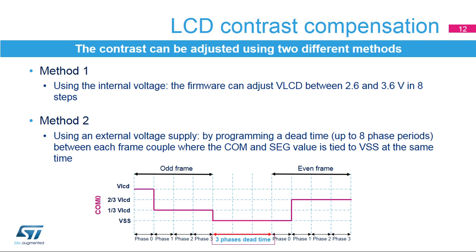The LCD controller offers high contrast control flexibility. The method used to adjust the contrast depends on the LCD supply source. When the step-up converter is selected as VLCD source, the VLCD value can be chosen among a wide set of values from 2.6 to 3.6 volts, which are selectable via the contrast control bits in the LCD FCR register. However, when using an external LCD supply source, the contrast level is adjusted using a programmable dead time, where both active COM and SEG terminals are all tied to VSS at the same time between each odd frame and each even frame. As a result, the LCD RMS voltage of the entire frame, odd and even, is reduced, thus decreasing the contrast. Of course, the longer the dead time periods, the lower the contrast.